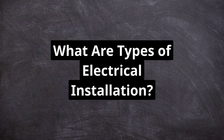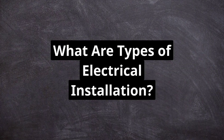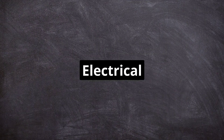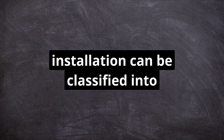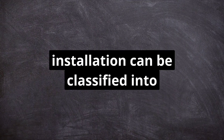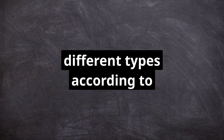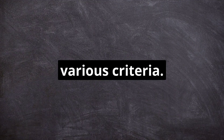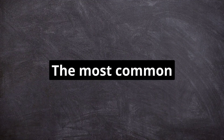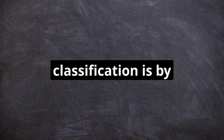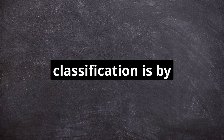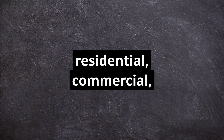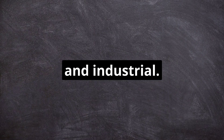What are the types of electrical installation? Electrical installation can be classified into different types according to various criteria. The most common classification is by application, such as residential, commercial, and industrial.